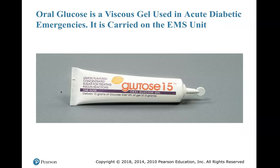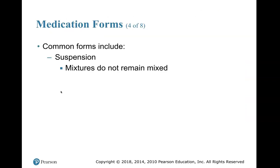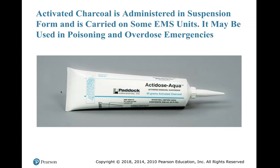Gels: oral glucose — Glutose 15 is the trade name — is carried on the truck and administered to raise a patient's blood sugar level if it is low and abnormal. Suspension: drug mixtures that do not remain mixed. Actadose Aqua is activated charcoal — for alert patients who have possibly been poisoned, given orally so the patient swallows it. It goes into the stomach and hopefully absorbs the ingested poison.